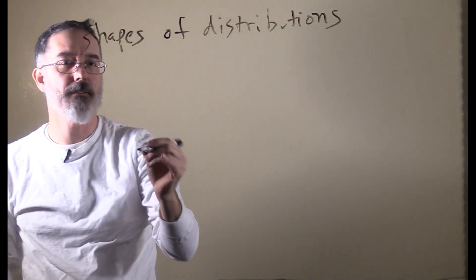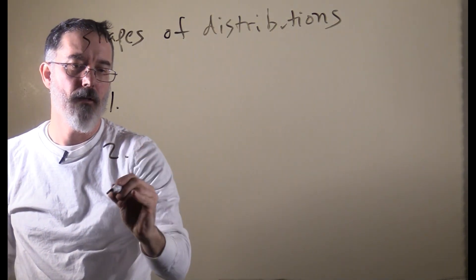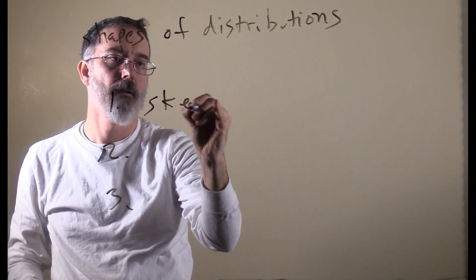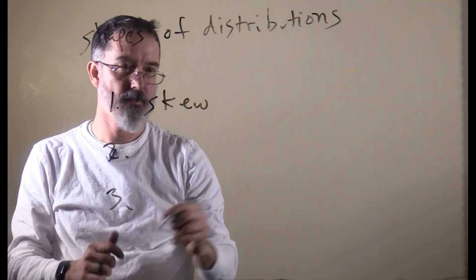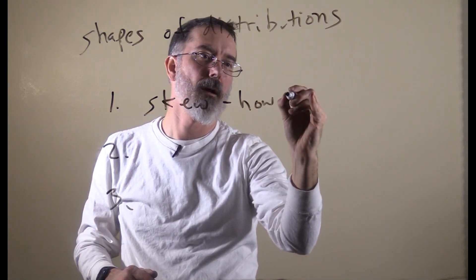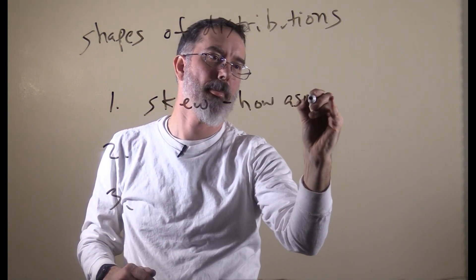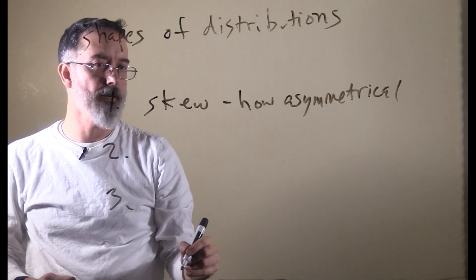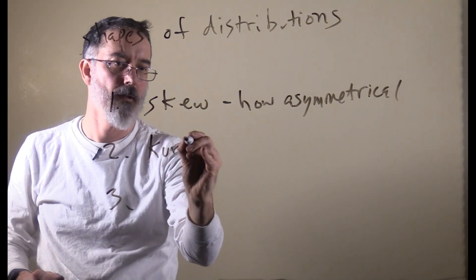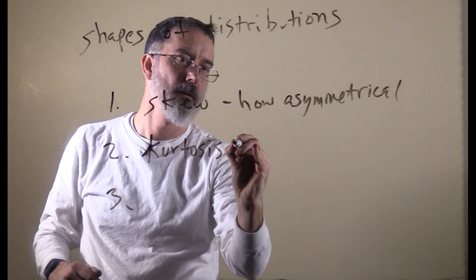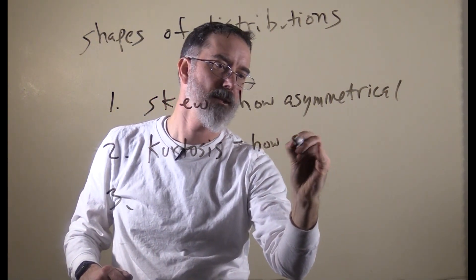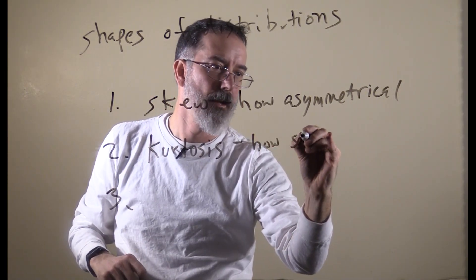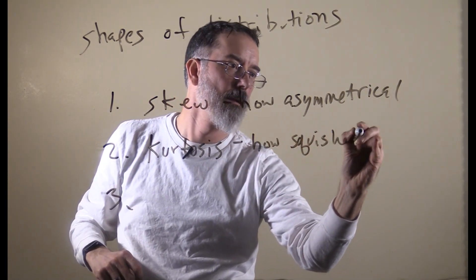For the shapes of distribution, there are three key characteristics. One is the skew of a distribution, which is how symmetrical or asymmetrical a distribution is. There is kurtosis, which is how squished or flat or piled up a distribution is.